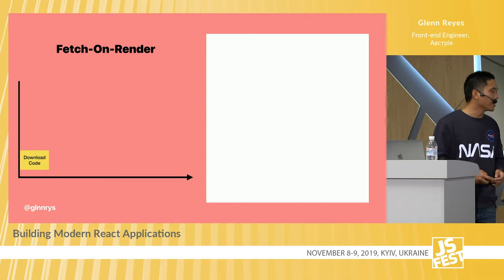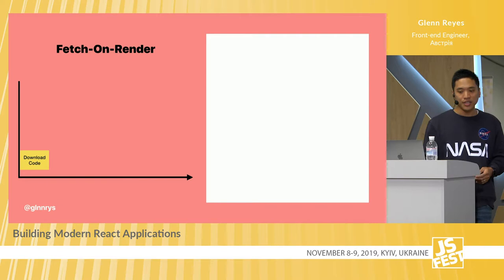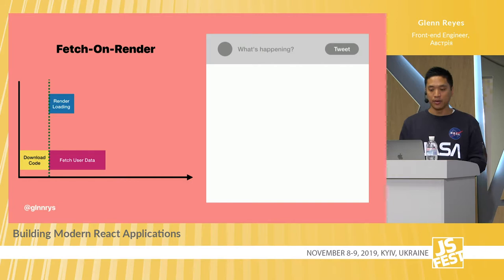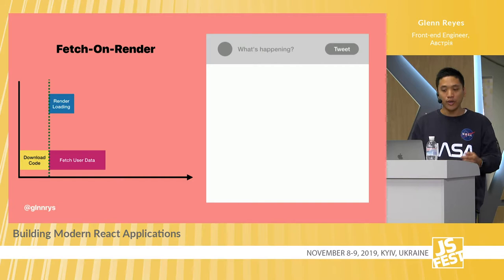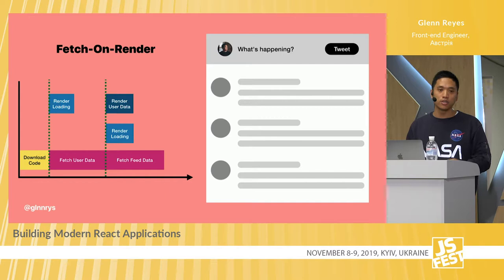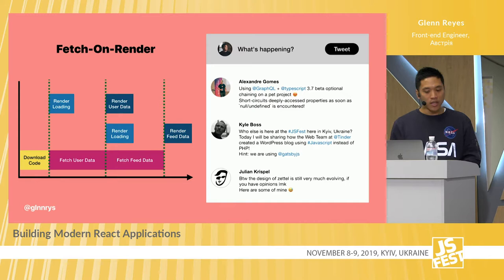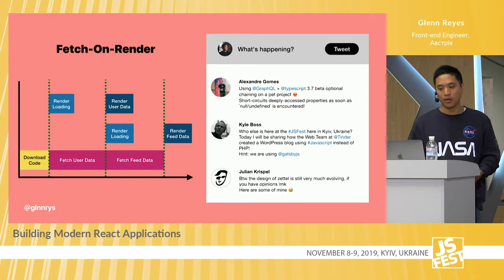Here's how that looks on a timeline: we download the code, then once downloaded, we render a loading state and fetch user data. On the right you see the loading UI for the tweet composer. Once we fetch data, we start rendering the user data — the avatar — and load the UI for the feed and start fetching feed data. Now we have a loading component rendered in our feed. Once we have the data, we render it in the UI. Some of you may have noticed the waterfall here, which can lead to huge loading times in more complex use cases.